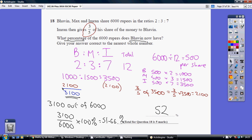Plus the 2100 he's just got from Imran, that gives him a total of 3100. Now we're asked what percentage of the 6000 does he get?